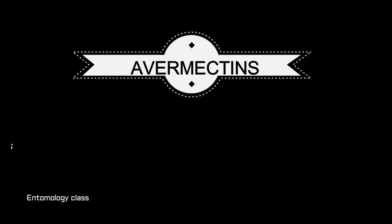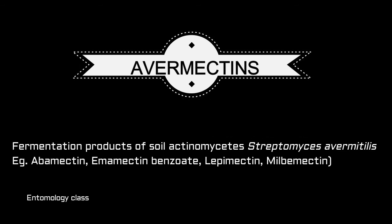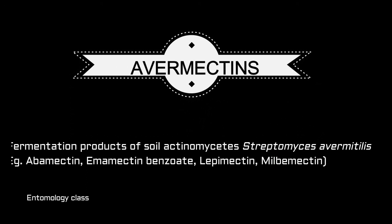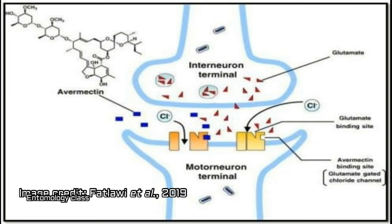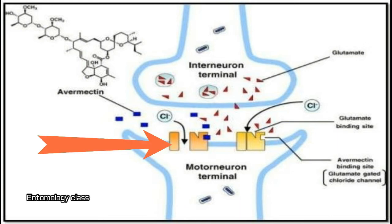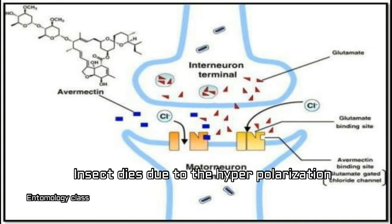Moving on to our next insecticide group, that is avermectins. Avermectins are naturally occurring fermentation products produced from a soil actinomycete such as Streptomyces avermitilis. Examples of some commercial products are abamectin, emamectin benzoate, and milbemectin. The avermectins block the transmission of electrical activity in insect nerve and muscle cells, mostly by modulating insect-specific chloride channels. These channels are species-specific to the insect, so it won't affect other non-targeted organisms like mammals. Chloride channels are important for the inhibition of impulses. As this channel is affected, it causes uncontrolled flow of chloride ions into the cells, leading to hyperpolarization and subsequent paralysis of the insect.